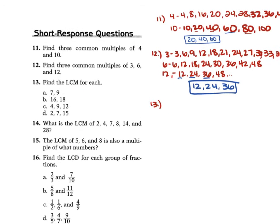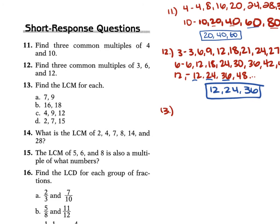For problem 13, we find the Least Common Multiple for each pair. For A, we have 7 and 9. Using prime factorization: 7 is prime (1 and 7), and 9 is 3 times 3. We multiply all unique factors: 3 times 3 times 7, or 9 times 7, which is 63.